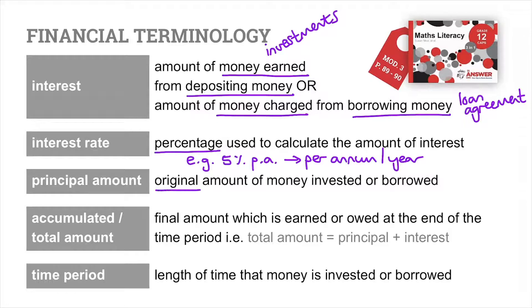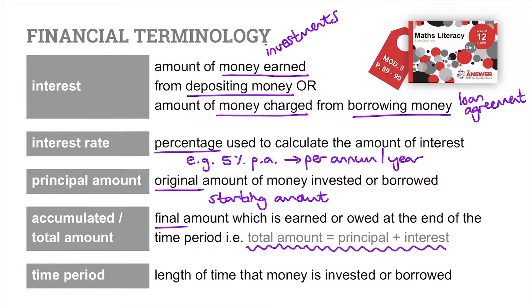The principal amount is the original amount of money invested or borrowed — think of this as our starting amount. The accumulated or total amount is the final amount earned or owed at the end of the time period. A key general formula is: total amount equals principal plus interest — put a star around this because you'll use it frequently. The time period is the length of time money is invested or borrowed, given in months or years depending on the scenario.